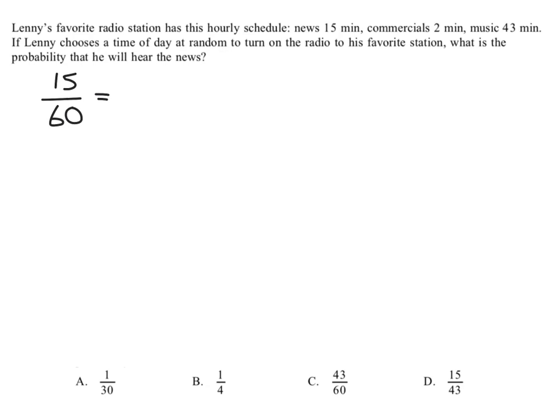So you could say P of hears news, and you could write that as 15 out of 60, but you will always simplify it, and that will be 1 out of 4, and that is B.